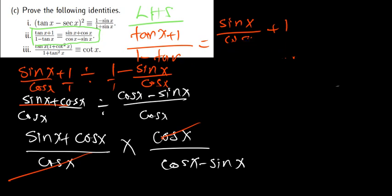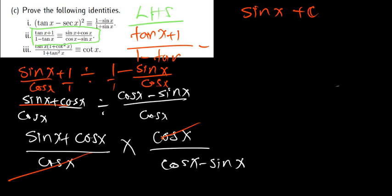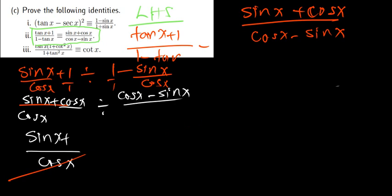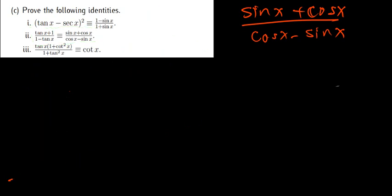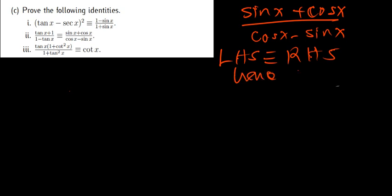After cancellation, I end up with (sin x + cos x) divided by (cos x − sin x). I can clearly see that the left hand side is equal to the right hand side. So the left hand side is equivalent to the right hand side — hence proved.